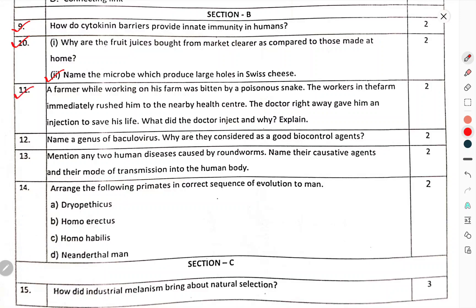Question number 11 — A farmer while working on his farm was bitten by a poisonous snake. The workers on the farm immediately rushed him to the nearby healthcare. The doctor right away gave him an injection to save his life.